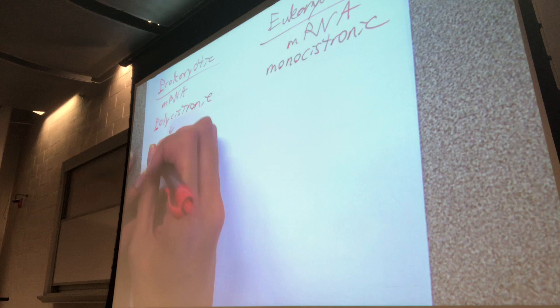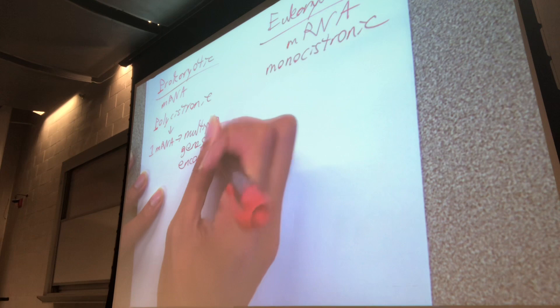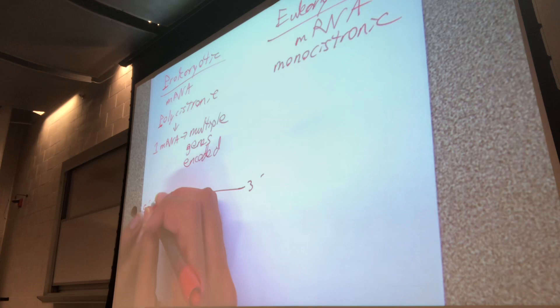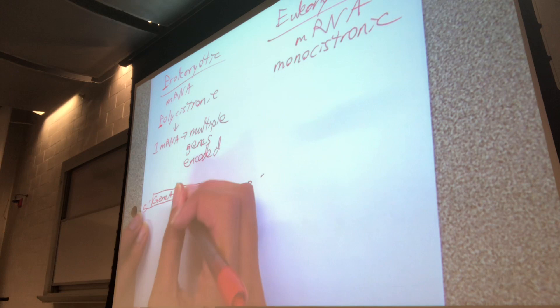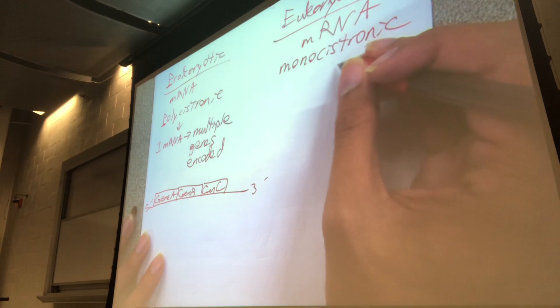Polycistronic means that for a single mRNA molecule you can have multiple genes encoded on it. If I do a drawing — five prime to three prime — this is a polycistronic mRNA. Gene A would be encoded in there, gene B, gene C, etc., all on the exact same strand of mRNA. These genes will be encoded simultaneously.